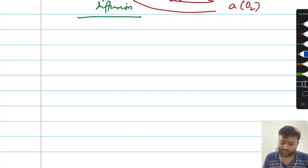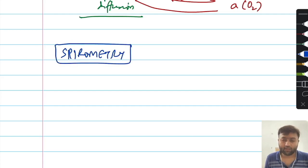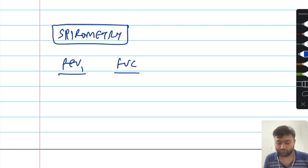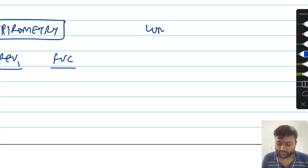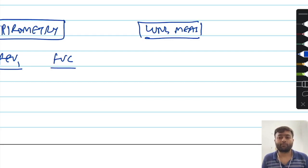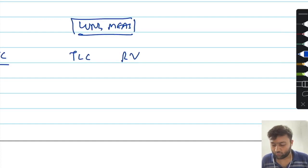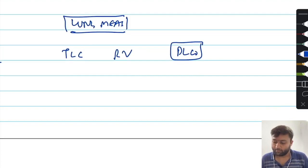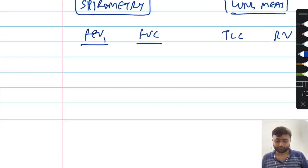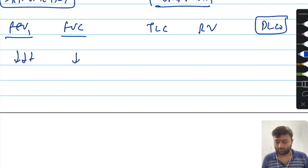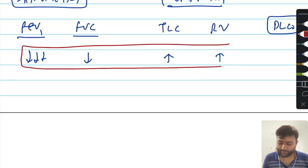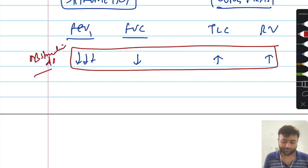In spirometry, you will get FEV1 and FVC values — that is the forced expiratory volume in the first second and forced vital capacity — but you must supplement this with lung volume measurements including TLC and residual volume, and also DLCO. If the FEV1 is substantially decreased and so is FVC, but TLC is increased and so is residual volume, this is the general pattern manifested by obstructive disorders.